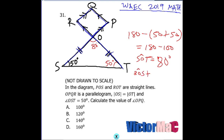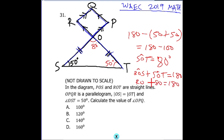On a straight line, angles ROS and SOT sum to 180 degrees — angles on a straight line. So if SOT is 80, then angle ROS will be 180 minus 80, which is 100 degrees. Another way to get this 100 is to say the sum of two interior angles in a triangle gives the exterior angle.